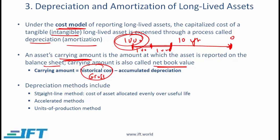There are several different depreciation methods. The three you need to be aware of are: straight-line, where cost is allocated evenly over the useful life; accelerated methods, which depreciate more in the early years and less in the later years; and the units of production method, where depreciation is based on how much is being produced. If the machine can produce 1,000 units and 300 units are produced in year one, we depreciate 30% in year one.